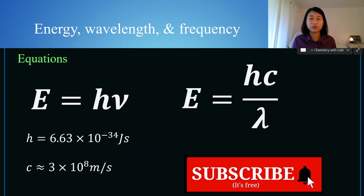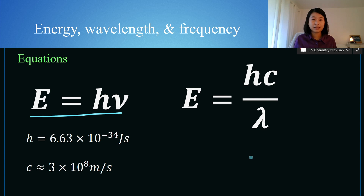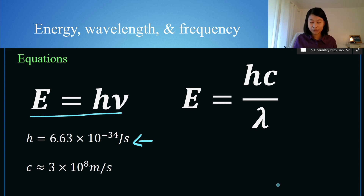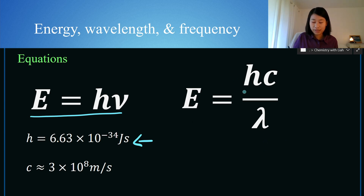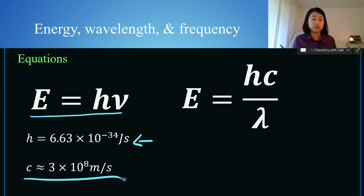Let's start talking about the equations used for these kinds of problems. On the left we have E equals H times nu. E means energy, H means Planck's constant, and nu — this V-looking character — is our frequency in Hertz. On the right we have our other energy equation: E is equal to H times C all over lambda. H is Planck's constant, C is the speed of light, which I'm going to approximate to 3 times 10 to the 8 meters per second, and lambda represents the wavelength.